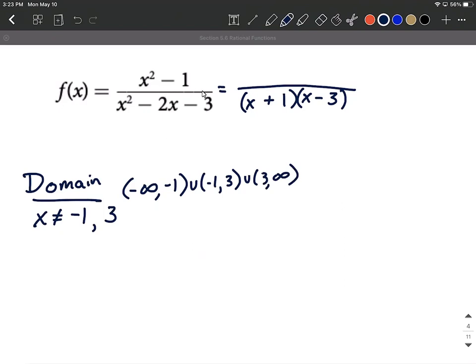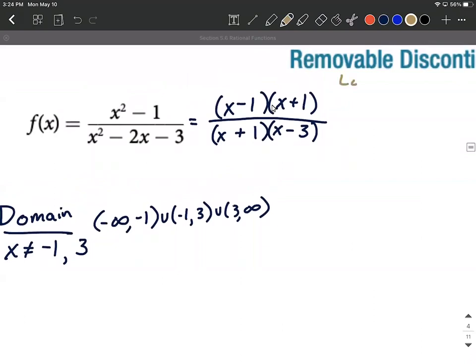That checking comes from factoring the numerator if at all possible. So this numerator you may notice is a difference of squares, so hopefully we're comfortable with saying that can be split apart and factored as x minus one, x plus one, but you'll notice in this that we have a common factor between numerator and denominator. They both have an x plus one. So what we can do is we can put this into what we refer to as lowest terms.